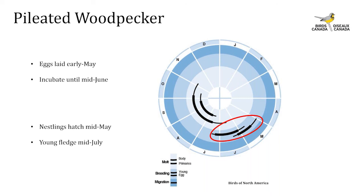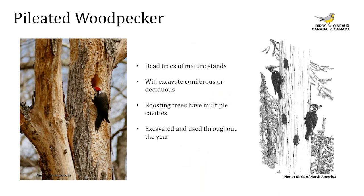Two terms to define: nestlings and fledglings. A nestling is a young bird that has just hatched and is completely dependent on adults — it can't feed itself, walk, or fly. Once it grows adult-like feathers and begins stretching its wings, it becomes a fledgling, at which point it's usually ready to leave the nest within a week. Pileated woodpecker nestlings hatch starting in mid-May, extending to mid-July, with the peak young stage in June.